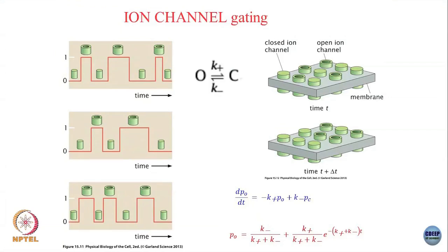The probability to find the ion channel in the open state is k₋/(k₊ + k₋) plus a decaying term that dies out over time. If you wait long enough, you see just the steady-state probability. This framework allows you to write down the full time dependence without needing to make the steady-state approximation — you get the full time dependence of P_O provided you give the initial conditions.